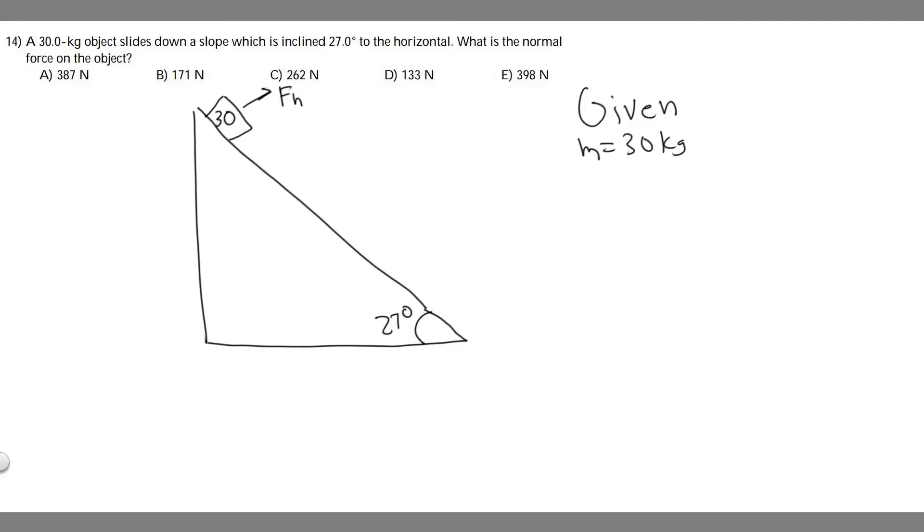In this problem we're told a 30 kilogram object slides down a slope which is inclined 27 degrees to the horizontal. What is the normal force on the object?